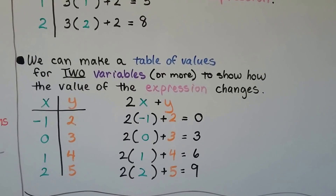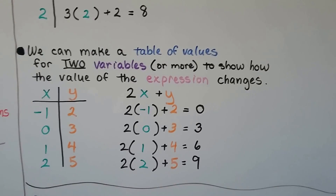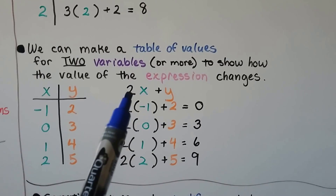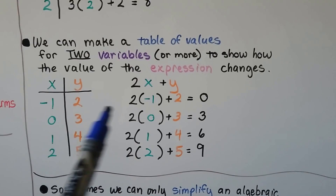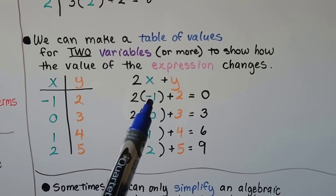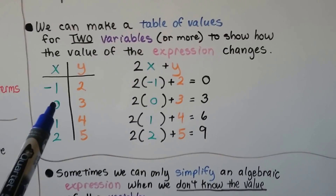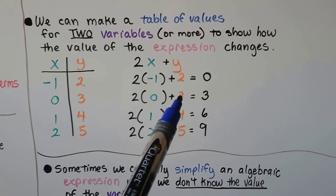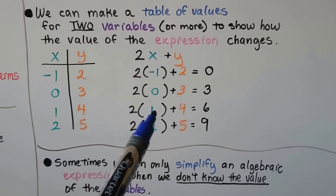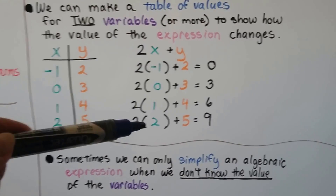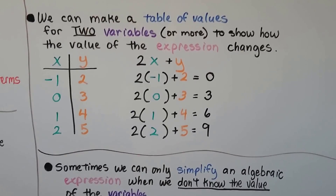We can make a table of values for two variables, x and y, to show how the values of an expression change. If our expression is 2x plus y: if x is negative 1 and y is 2, the whole thing equals 0, because 2 times negative 1 is negative 2, plus 2 is 0 — a zero pair. If x is 0 and y is 3, then 2 times 0 is 0 plus 3, that's 3. If x is 1 and y is 4, then 2 plus 4 equals 6. By plugging in different values for x and y, we change what the expression equals.